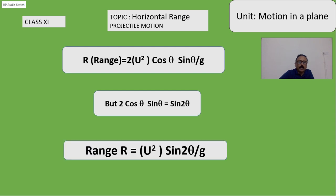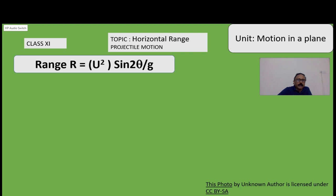Therefore, the final formula for range is u² sin 2θ by g. That means the range is depending on the initial velocity given to the projectile and the angle of projection θ.